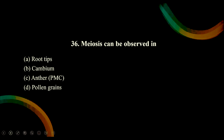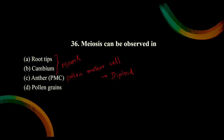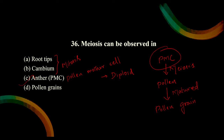Meiosis can be observed in - option A is root tip and option B is cambium. In root tip and cambium, mitosis occurs, not meiosis. We need to find from anther or pollen grain. Anther PMC stands for pollen mother cell, also called microspore mother cell - it is diploid. In the anther, it undergoes two meiotic divisions to form four haploid cells. Pollen mother cells undergo meiosis to form pollens. The correct option is C - anther PMC.